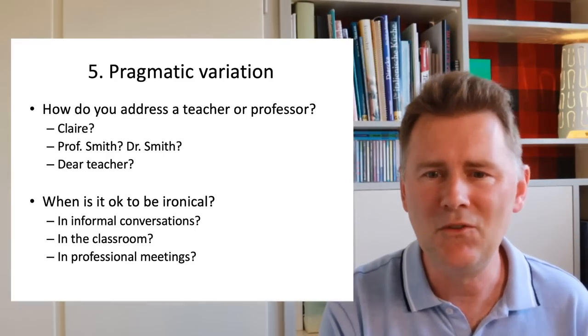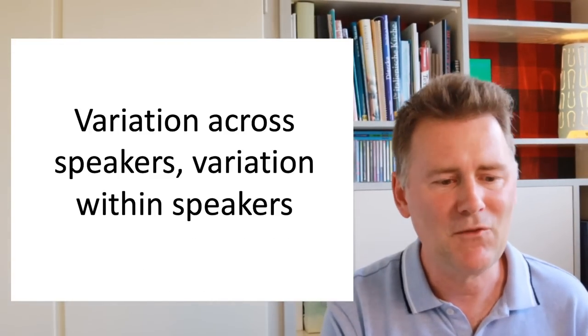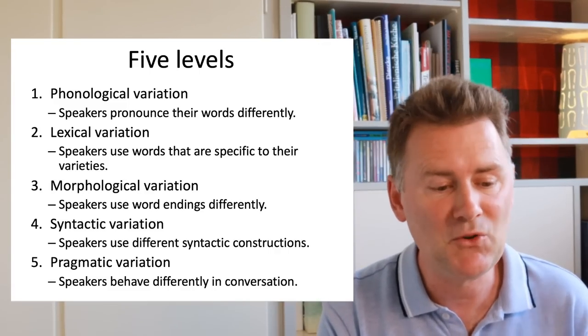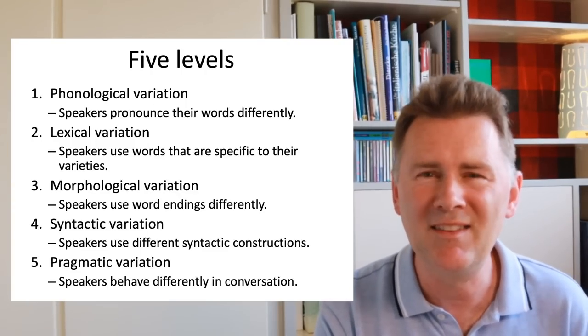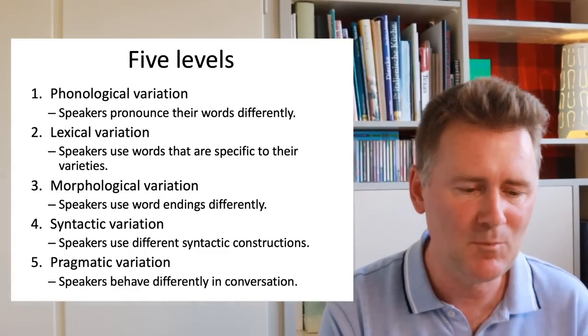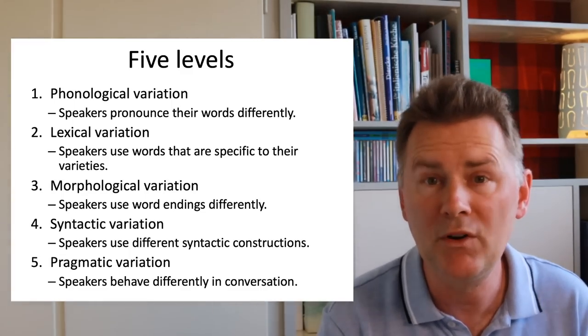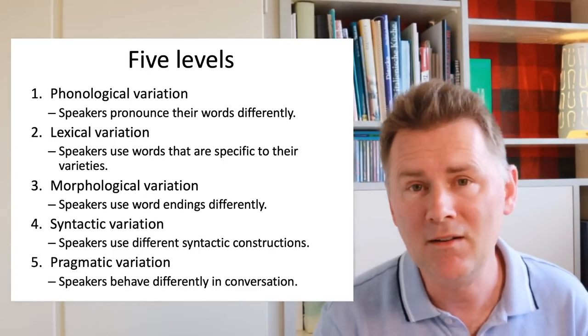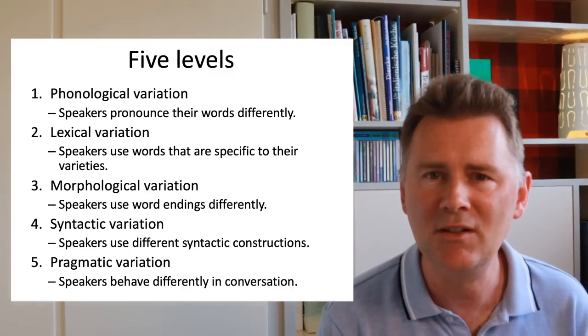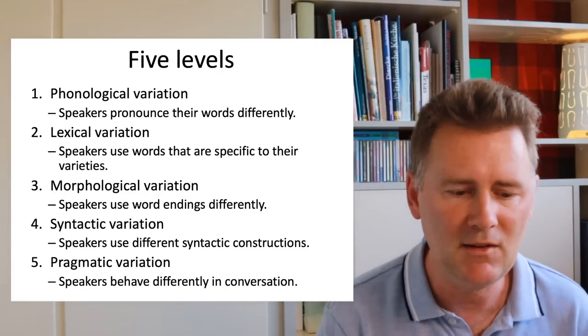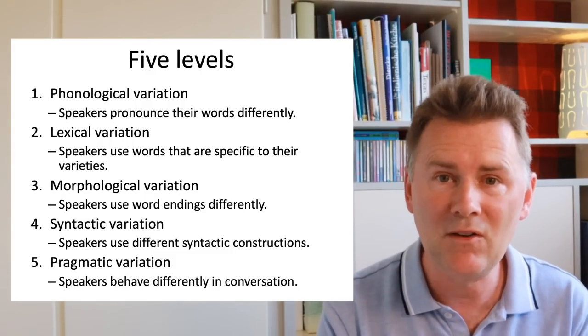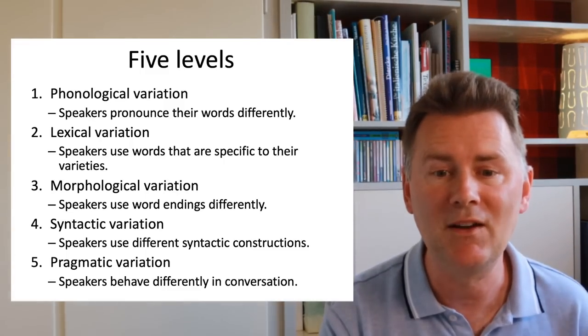Right. So this brings me back to the five levels of variation in language. Phonological variation, which concerns how speakers pronounce their words. Lexical variation, which concerns the words that speakers use and the specificity of these words to certain varieties. Morphological variation, I've presented as variation in how speakers use word endings. I've talked about grammatical word endings, but we can also consider derivational morphology here. Fourth is syntactic variation, the fact that speakers across different varieties use different syntactic constructions. And pragmatic variation concerns the fact that speakers across different communities behave differently in conversation.